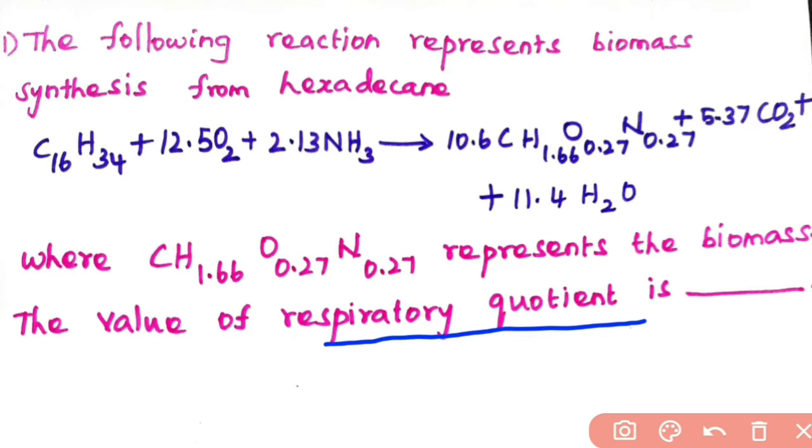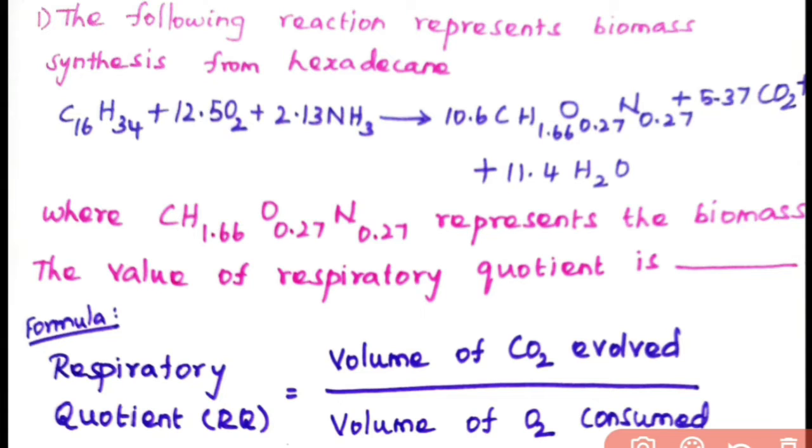The formula to calculate respiratory quotient, or respiratory ratio, or RQ, is volume of CO2 evolved divided by volume of O2 consumed. Consider the given reaction. First, check if the reaction is balanced or not.